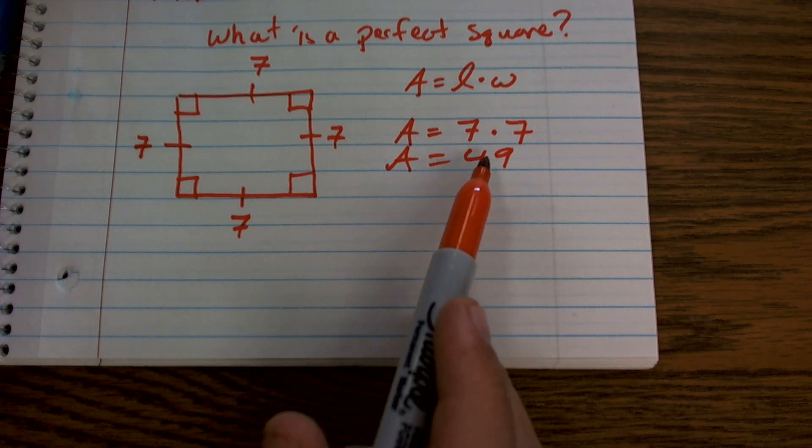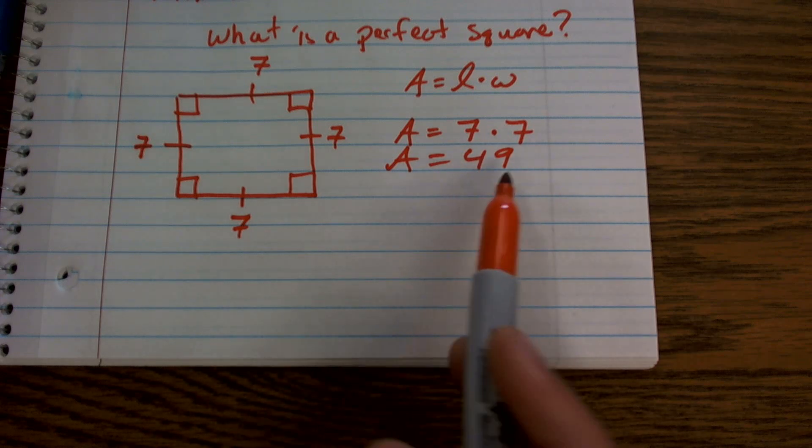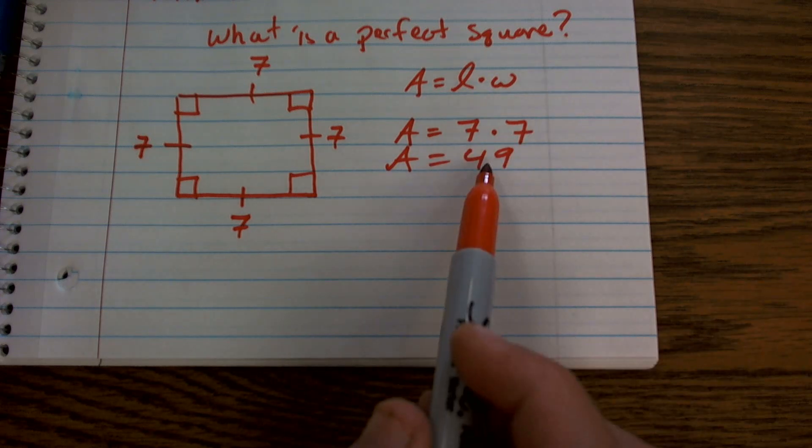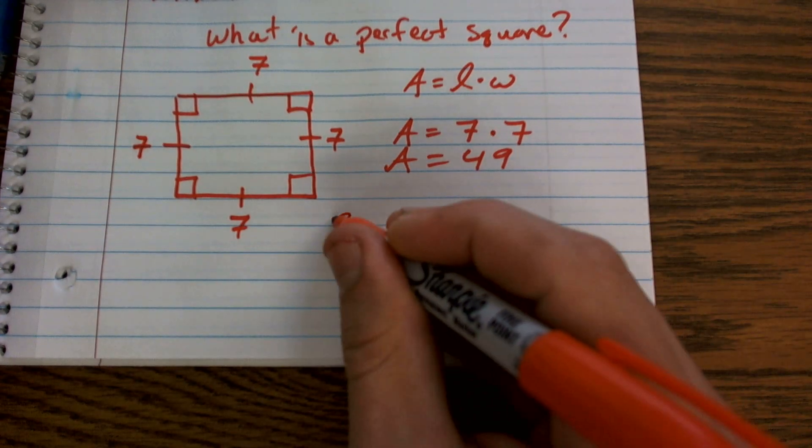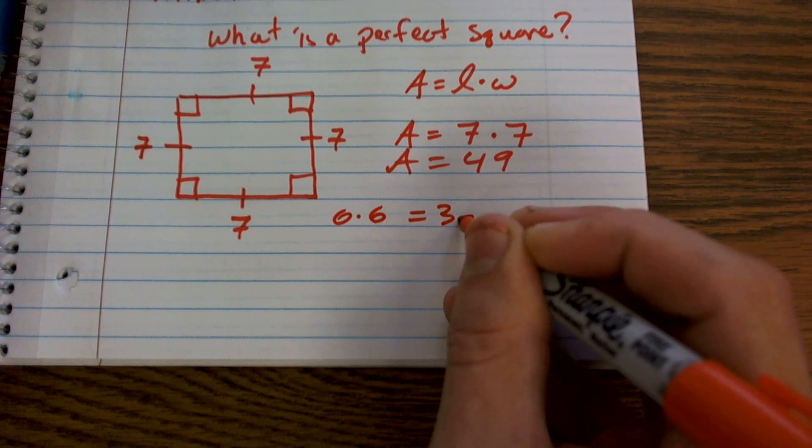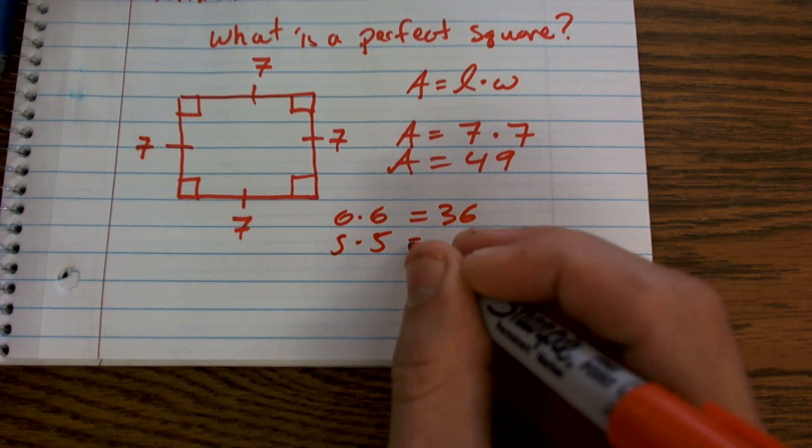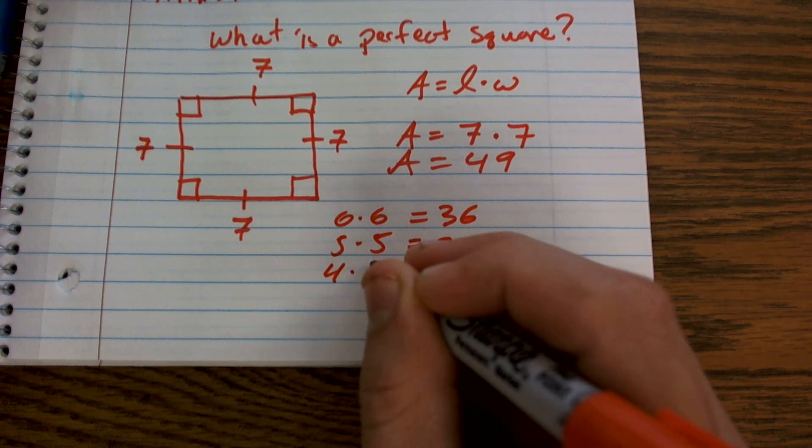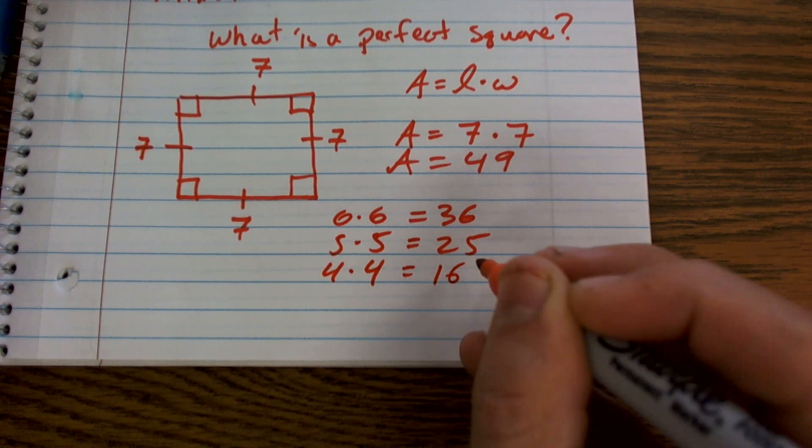But let's take a look at what other numbers would represent perfect squares. So seven times seven gives us 49. Let's do six times six equals 36. Five times five equals 25.